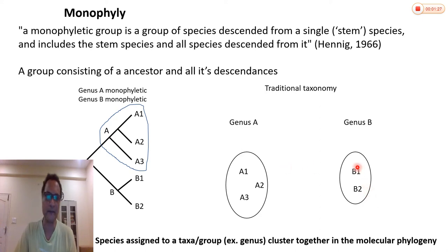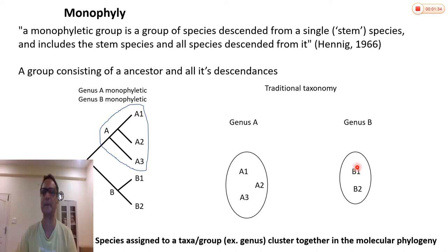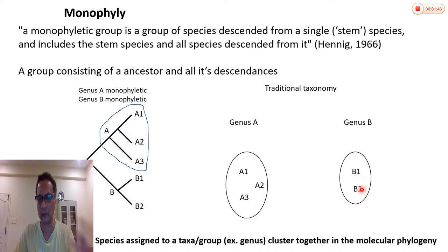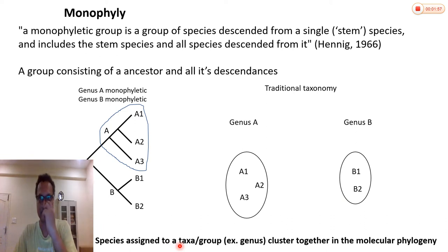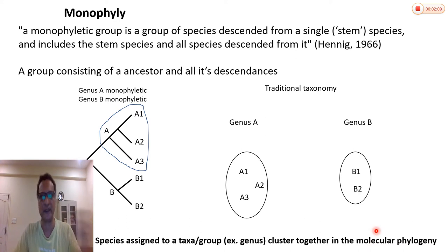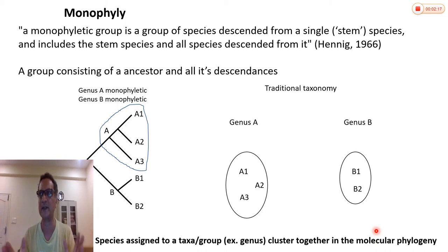These genera were identified based on traditional morphological characters — this was basically traditional taxonomy. Now, if you think about it, we would expect all three species of genus A to be more closely related to each other, and the two species of genus B to be more closely related to each other. Monophyly is a condition where species assigned to a taxon cluster together in the molecular phylogeny. We are comparing traditional taxonomy and molecular systematics — do they agree with each other or not?